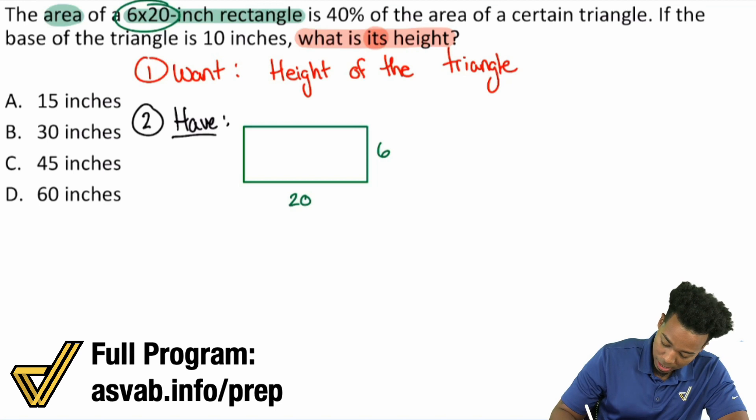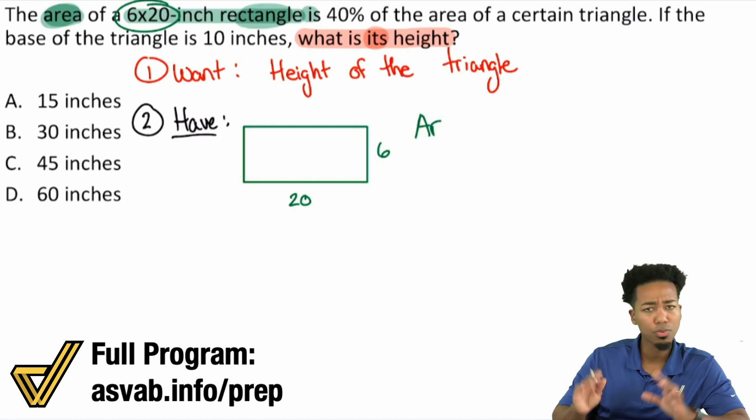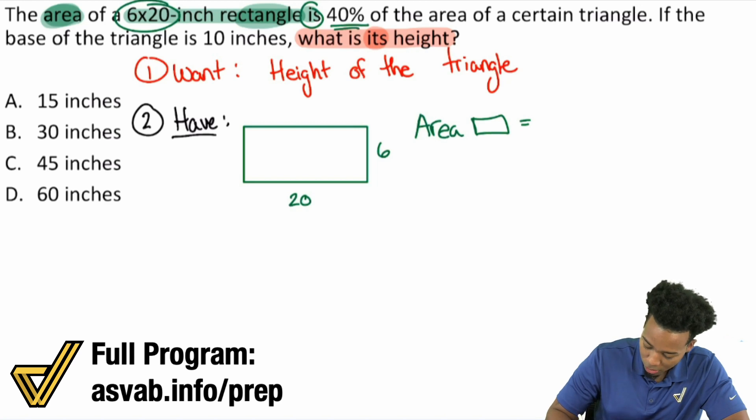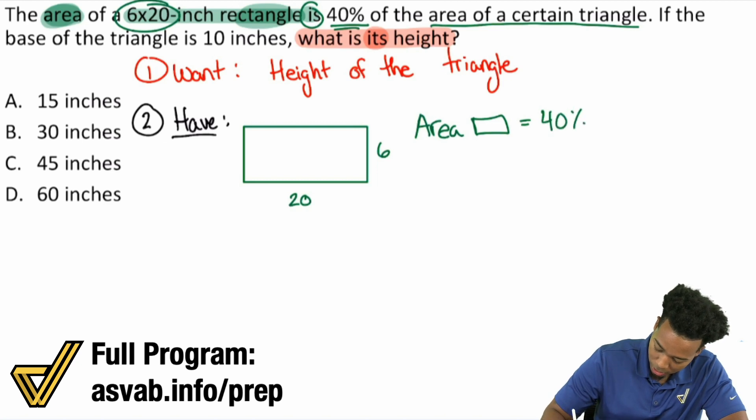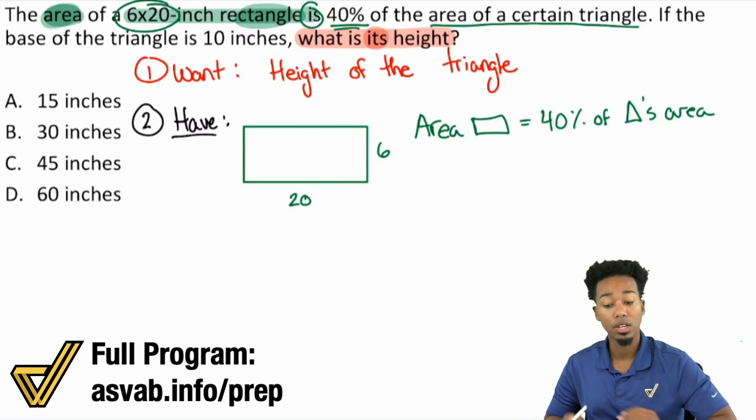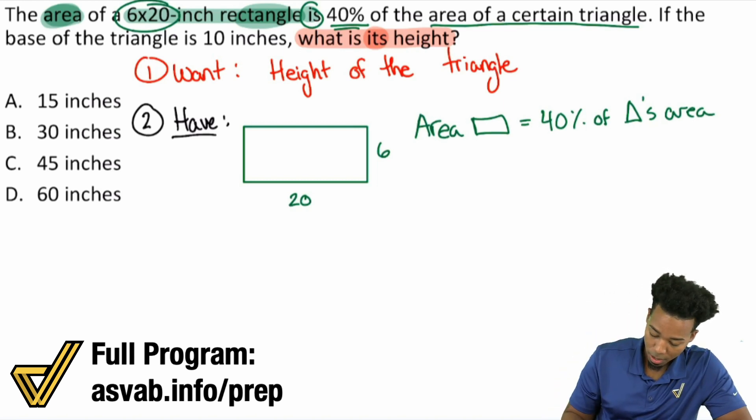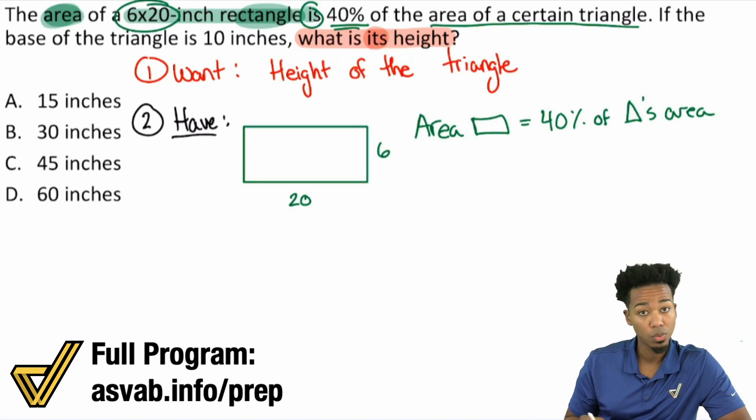The area of this rectangle, let's write that down mathematically. The area of the rectangle equals, because is means equals, 40% of the triangle's area. If the base of the triangle is 10 inches, what is its height?